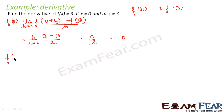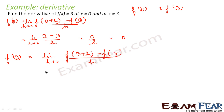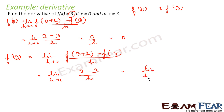Similarly, f'(3) = limit as h tends to 0 of f(3+h) minus f(3) by h. Since f(3+h)=3 and f(3)=3 for any value, because any number gives 3, this becomes the limit of 0/h as h tends to 0, which is 0. So both f'(0) and f'(3) are 0. Very simple — we just applied the formula: f'(0) is f(h) minus f(0) by h.